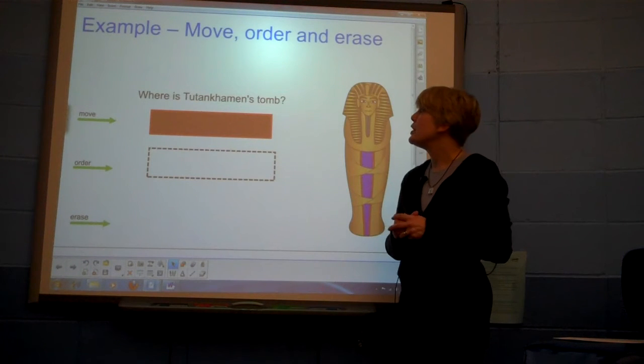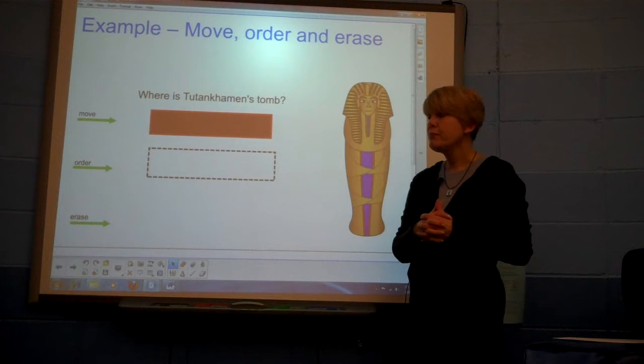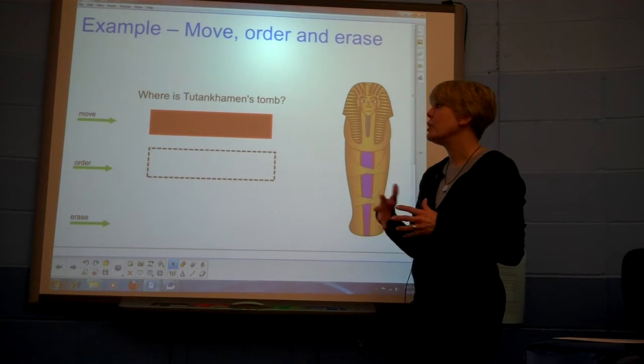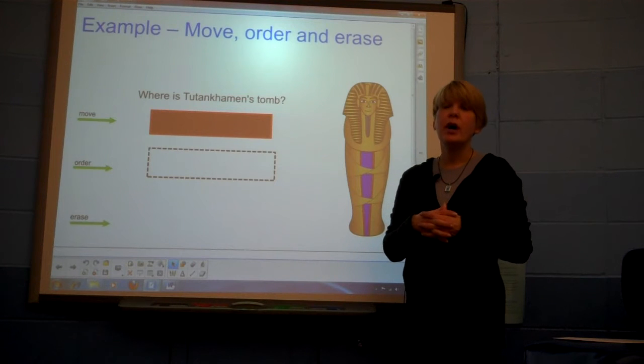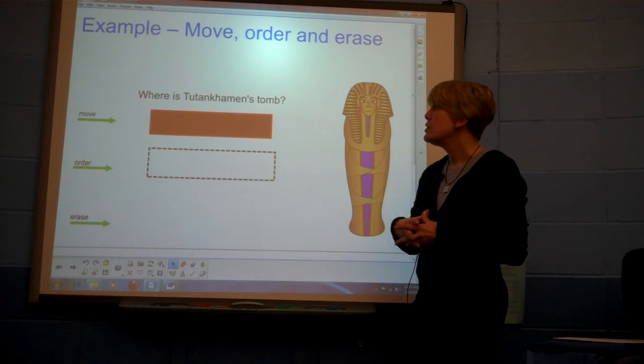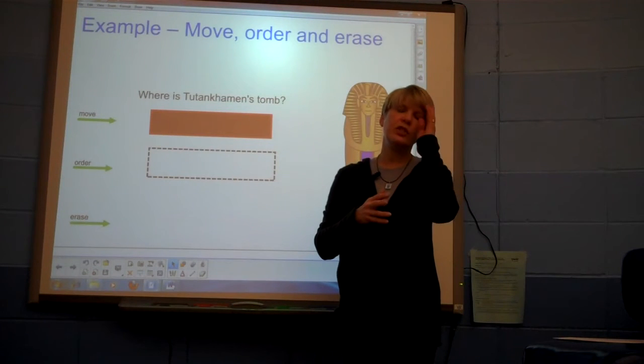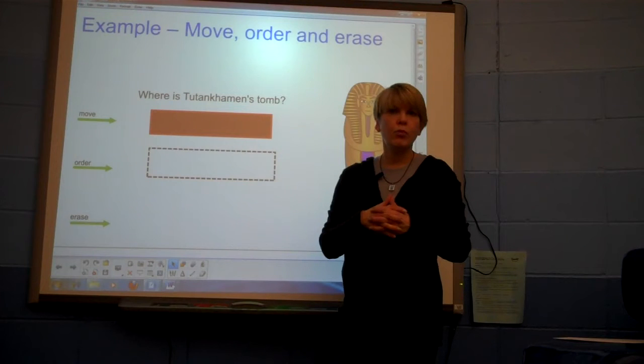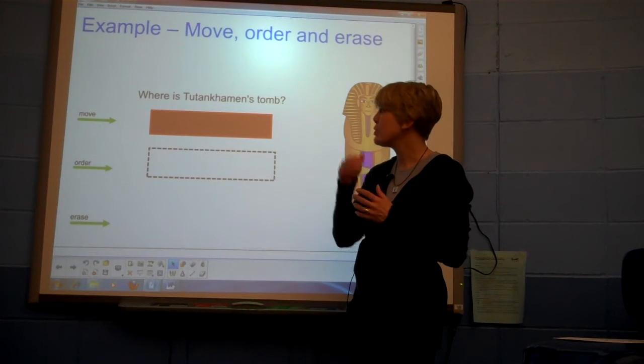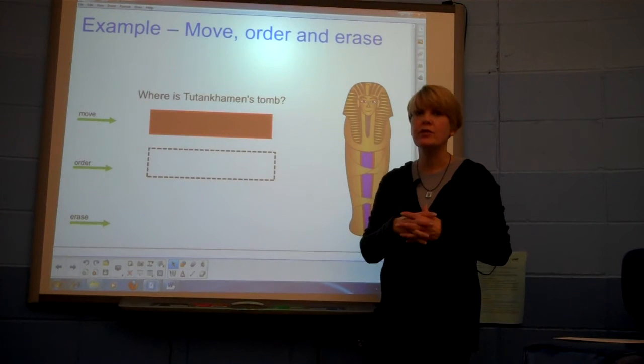So we have an example here. There is a question posed. Where is Tutankhamun's tomb? This will just give you a very brief demonstration of how each one of these hide and reveal techniques work. So the first one involves the technique or the method of move and reveal. What has happened here is that the text was typed on the page in a color that contrasts with the background, the white background.